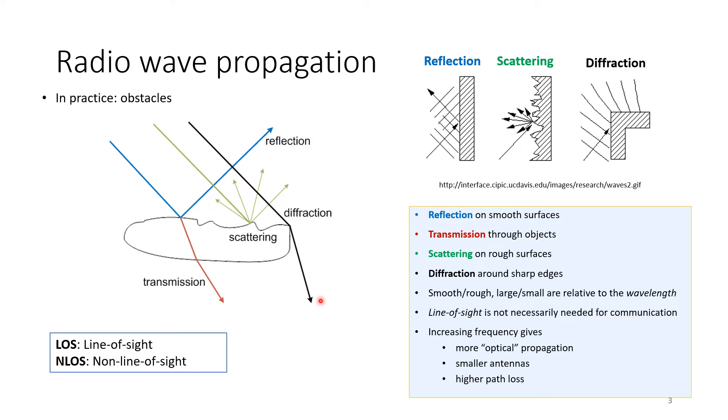Remember that as we increase the frequency, we get more of optical propagation. As you increase the frequency, you get more of kind of optical communication. The antenna size becomes smaller, but the path loss becomes higher. In general, low frequency allows better propagation. High frequency requires line of sight and requires smaller antenna, which is good, but it has higher path loss.